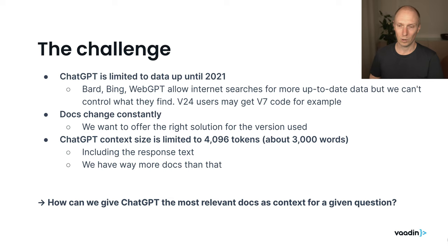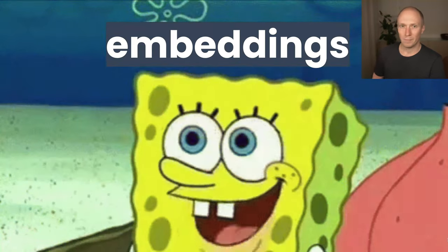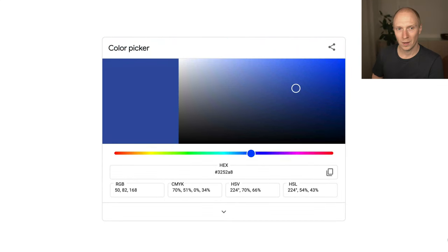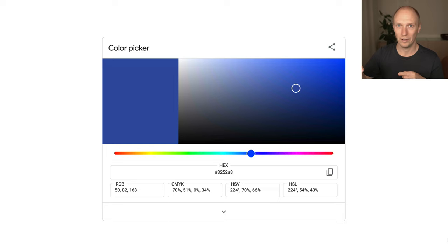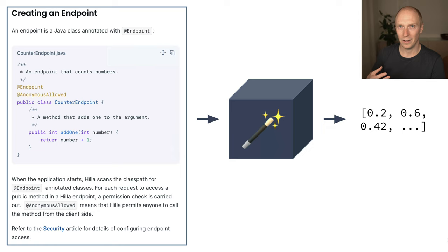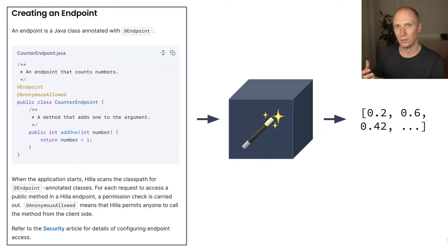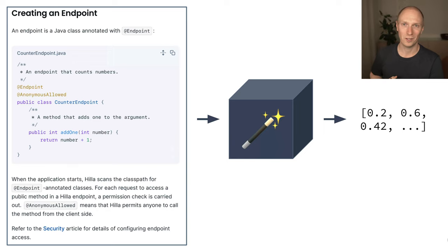The way I solved this was using embeddings. If you're not familiar with embeddings, let me start with an example. If you've ever used a color picker, you know you can represent any color as a red, green, blue value — essentially a vector with three elements. Two colors that are similar will have very similar values; two that are far apart will have very different values. Embeddings are similar: they take any text as input, and there's an OpenAI API we can call to get an embedding — a vector of about 1,500 dimensions — representing that piece of text as a point in a very large dimensional space.